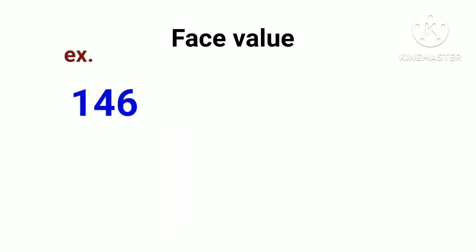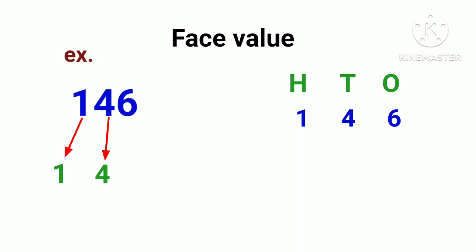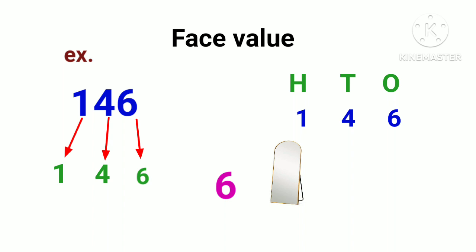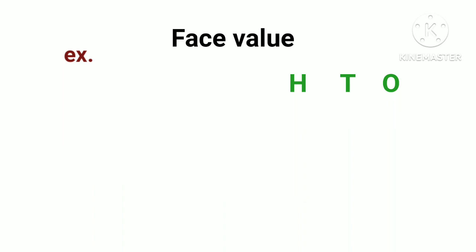Let's see the example: 146. It doesn't matter if it comes in the 1s place, 100s place, or 10s place — just see the number. Here, 1's face value is 1, 4's face value is 4, and 6's face value is 6. Just like if you look at the number 1 in a mirror, you still see number 1. Face value always stays the same.